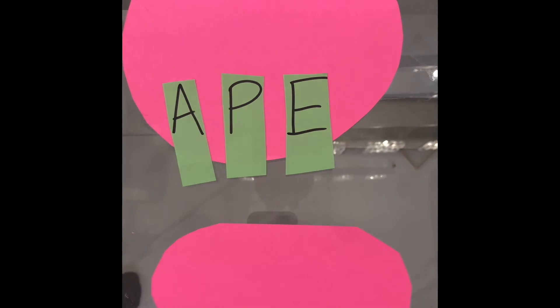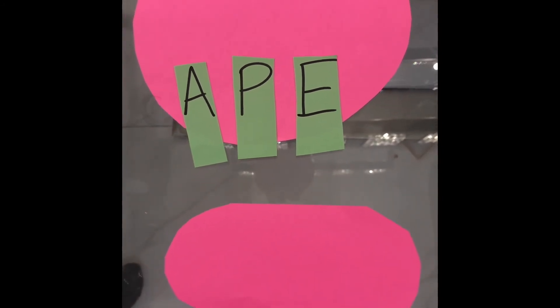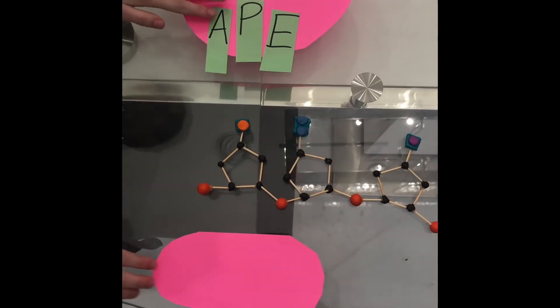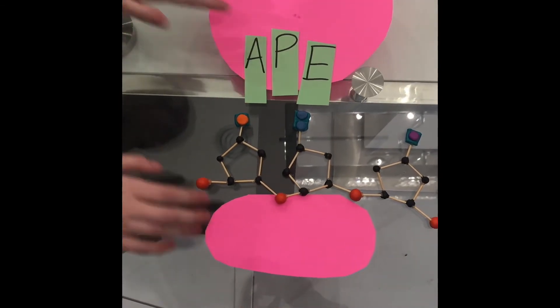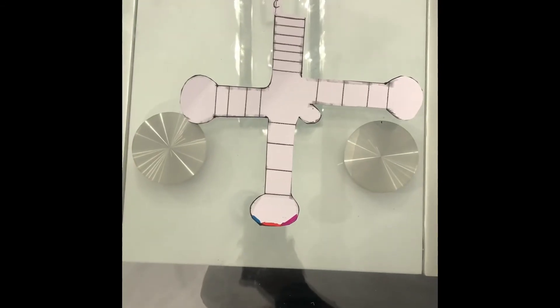A holds the tRNA and the next amino acid to be added to the chain. P holds the tRNA and the growing polypeptide chain. And E releases the tRNA after it's lost its amino acid. The polypeptide chain exits through a tunnel in the large ribosome subunit. They all combine to form the translation initiation complex. We've now entered the initiation phase.